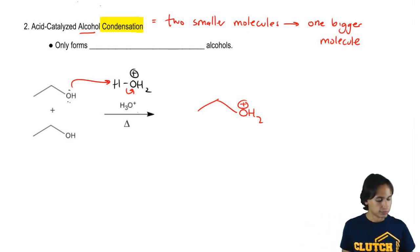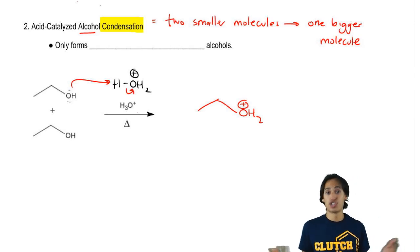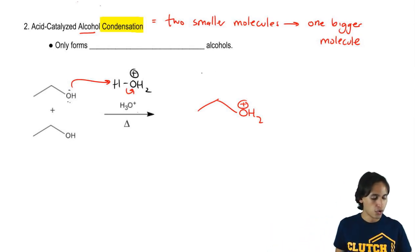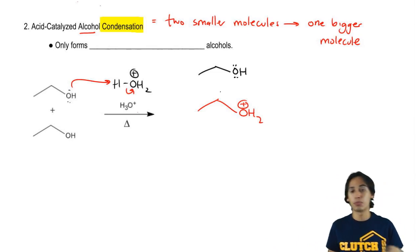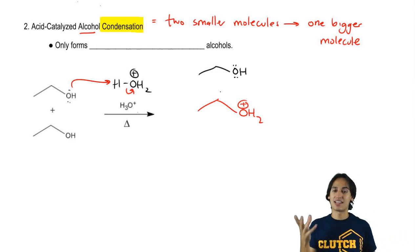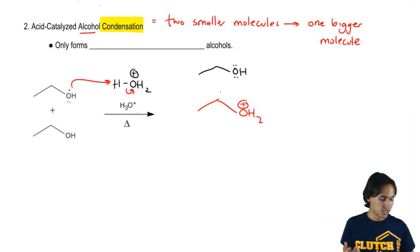Now what's going to happen is that that protonated alcohol just turned into a good leaving group. Water is a good leaving group. So my other equivalent of alcohol, the one that did not get protonated, is going to do a backside attack on this good leaving group. So we're basically going to get an SN2